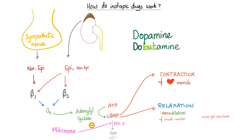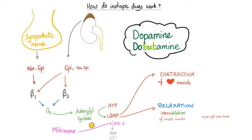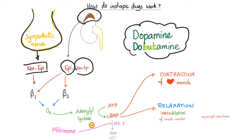How do inotropic drugs work? They can work by increasing cyclic AMP — remember, cyclic AMP in the heart muscle equals contraction, but in smooth muscle equals relaxation. Let's talk about dopamine and dobutamine. These are positive inotropic drugs; they increase contractility. Here is the story of your sympathetic nerve ending: it releases norepinephrine. But the adrenal medulla secretes both epinephrine and norepinephrine. Why doesn't the sympathetic nerve secrete epinephrine? Because it lacks the final enzyme.